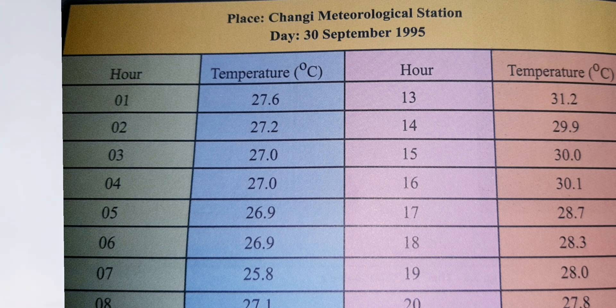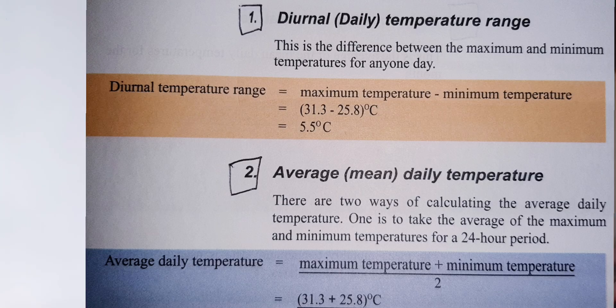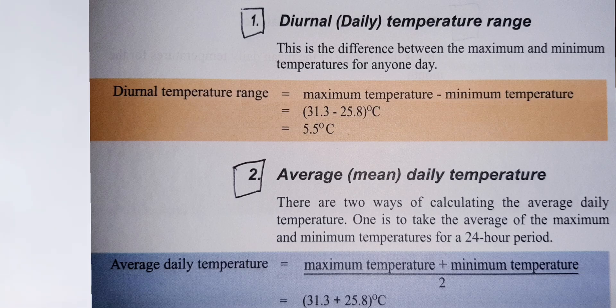you can see that 31.3 is the maximum temperature. Now you minus 25.8 degrees Celsius, which is the minimum. Now you get the diurnal temperature range — that is 5.5 degrees Celsius.